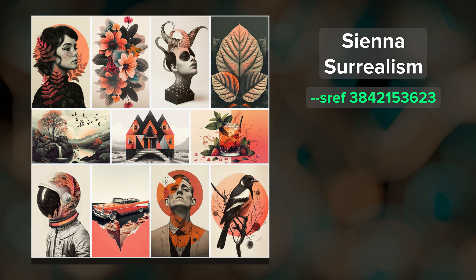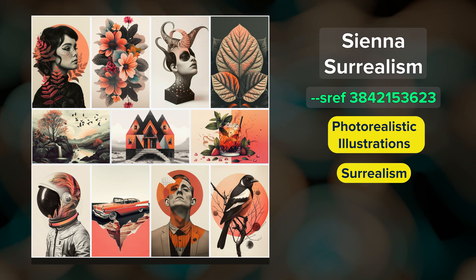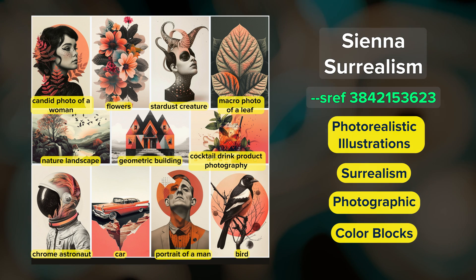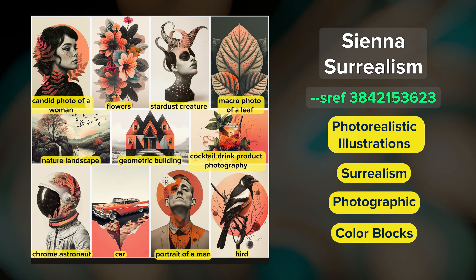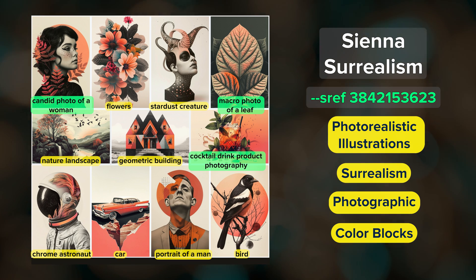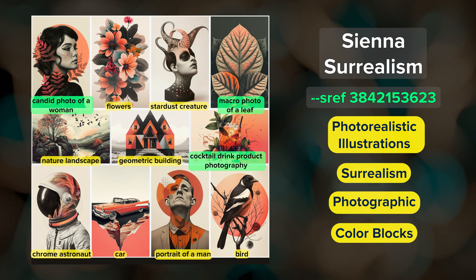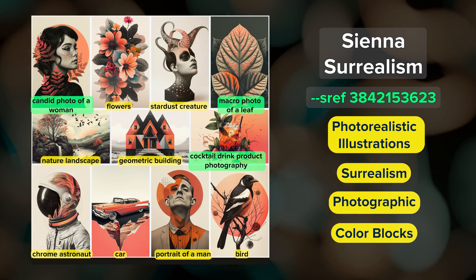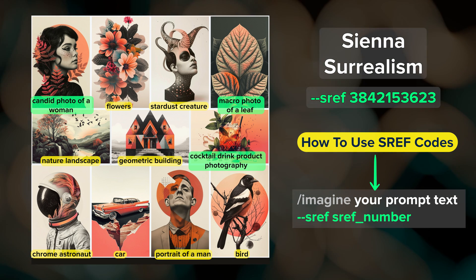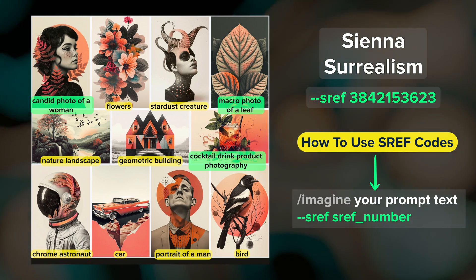Sienna Surrealism is an interesting blend of photorealistic illustrations and surrealism, but there are also hints of a photographic style and blocks of color like we can see with these orange circles. These are the text prompts that I use to create most of the images in this video. Pay attention to the images where the word 'photo' was included in the prompt — you can often make an illustrative sref code produce a photographic image by including it. To use this or any of the style reference codes in this video in your own prompts, just include the style reference parameter followed by a space and the sref code number at the end of your prompt.